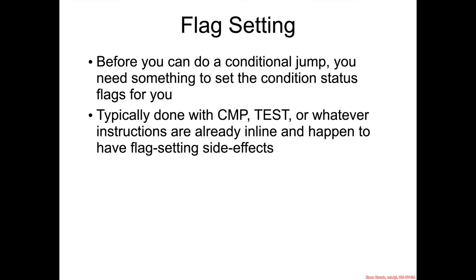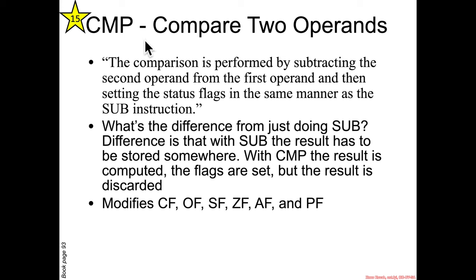Before assembly instructions like JCC can actually jump or not jump, something needs to set those status flags in the rflags register. This is typically done with something like a compare instruction, test — which we will learn about later — or whatever instructions are already in line, because things like add and subtract actually do have flag-setting side effects. I left that out of the descriptions of add and subtract earlier and we'll come back to it when we cover the optional material about all the different flags.